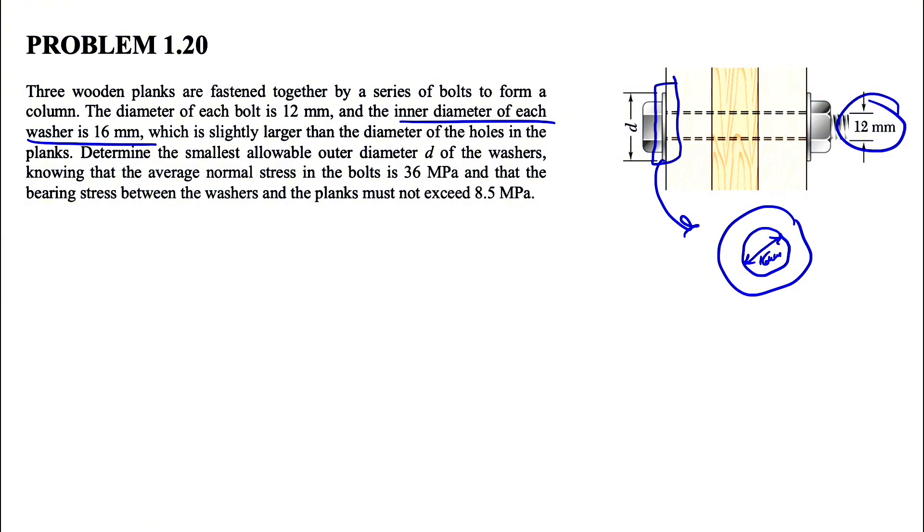We need to determine the smallest allowable outer diameter. We know the outer diameter, which is this one, is d. You can see it in here too. The condition is that the average normal stress in the bolts is 36 megapascals and the bearing stress between the washer and plank must not exceed 8.5 MPa.